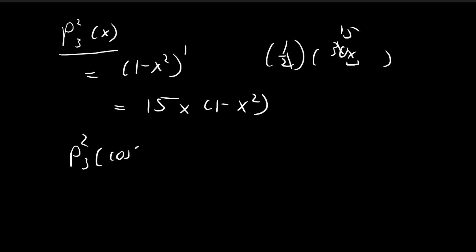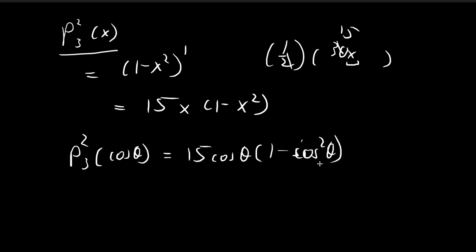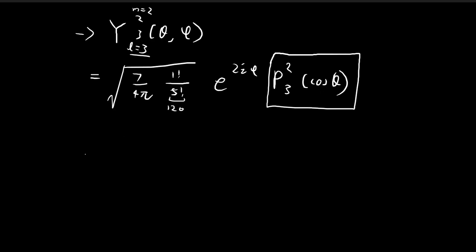Now we substitute cosθ in place of x. This gives us 15cosθ(1 − cos²θ). Since 1 − cos²θ equals sin²θ, we have P₂³(cosθ) = 15sin²θcosθ.